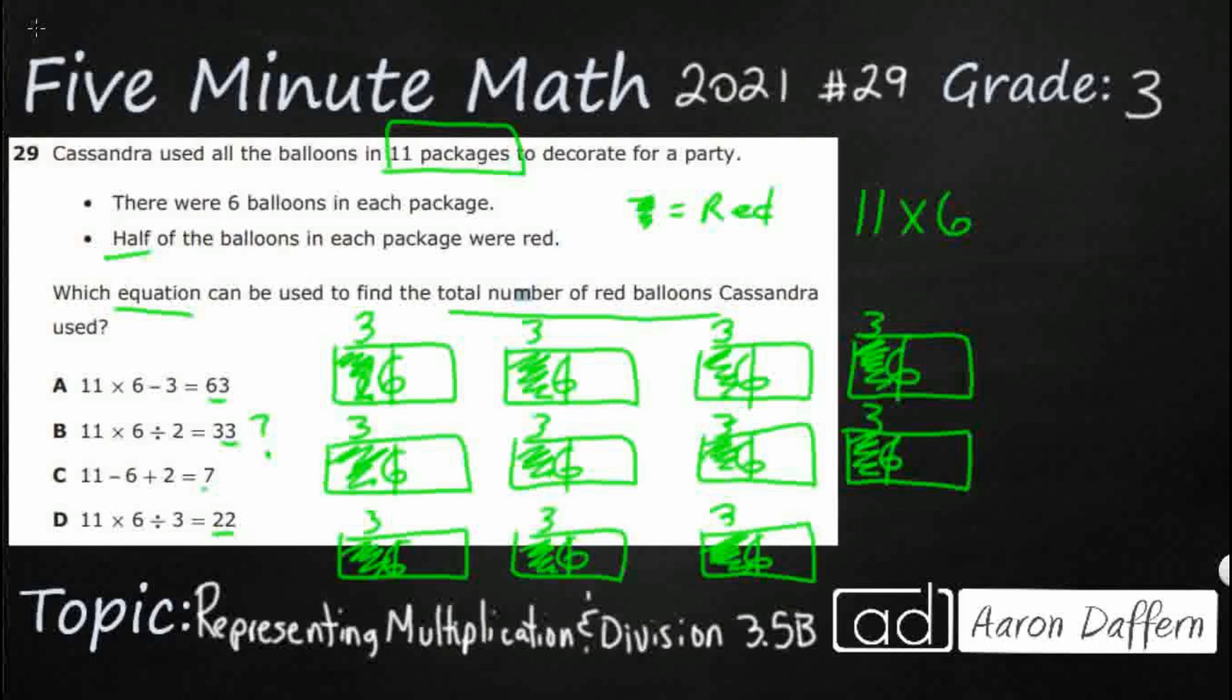It's a pretty clear, almost an array. It's not an array because we don't really have anything down here at the very bottom, right? So 11 times six. So A is going to work. B is going to work. Oh, C is off the table because this is 11 minus six. We're not subtracting here. We're multiplying. D works.